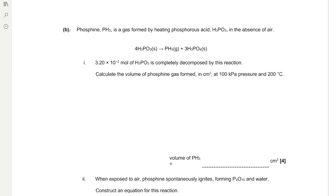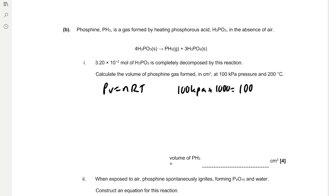Phosphine (PH₃) is a gas formed from phosphorus acid (H₃PO₃) in the absence of air: 4H₃PO₃ → PH₃ + 3H₃PO₄. 3.2 × 10⁻² mol of phosphorus acid is completely decomposed. Calculate the volume of phosphine gas in cm³ at 100 kPa and 200°C. This is not room temperature and pressure, so we use the ideal gas equation PV = nRT. Convert pressure to pascals: 100 × 1000 = 100,000 Pa. Convert temperature to kelvin: 200 + 273 = 473 K.